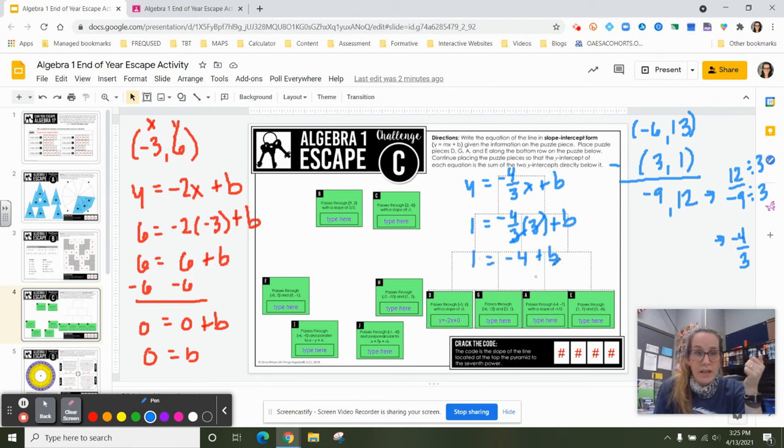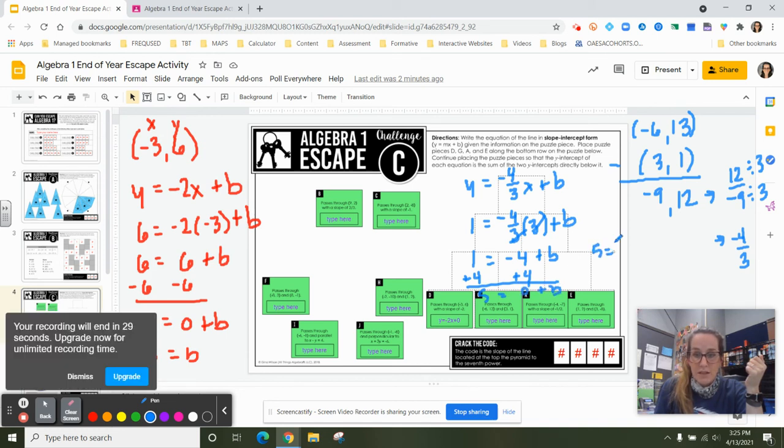I need to get rid of that 4 to figure out what my b is. So I'm going to add 4 to both sides of my equal sign. So I have 5 is equal to 0 plus b. 5 is equal to b.